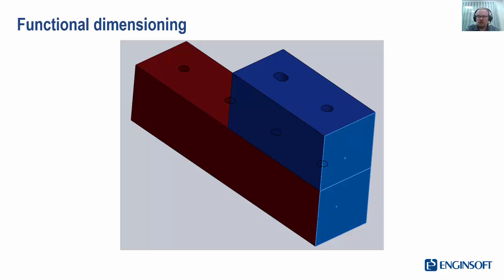Let's consider the effect the dimension scheme might have on the red part. Remember, we're interested in the distance between the last hole and the highlighted surface.